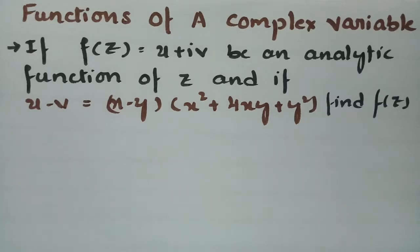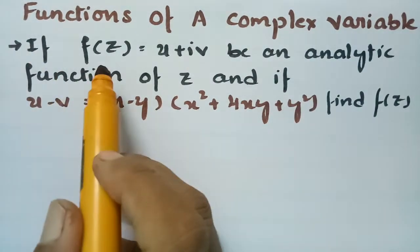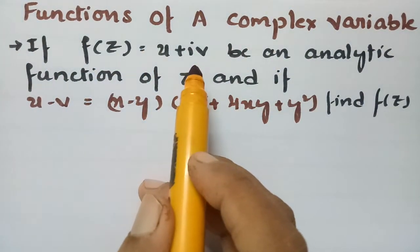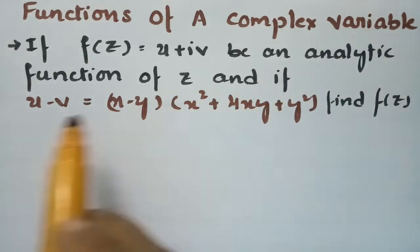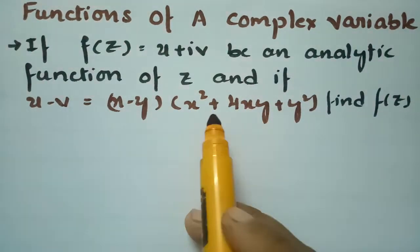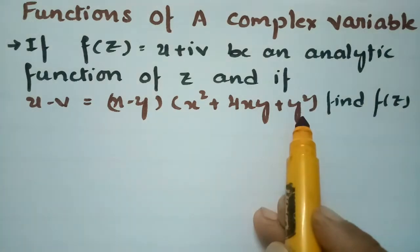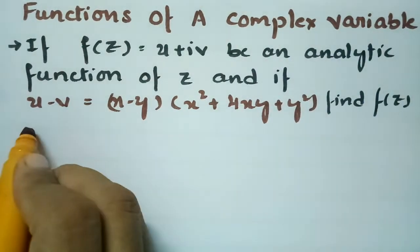Today's video I am going to explain a problem from functions of complex variables. If f(z) = u + iv is an analytic function of z, and if u minus v is given as (x - y)(x² + 4xy + y²), then we have to find the analytic function.